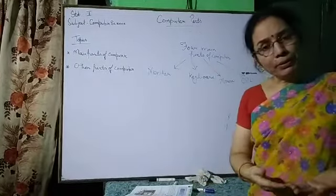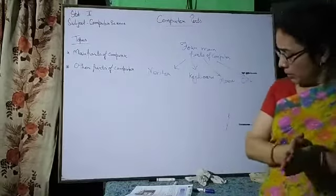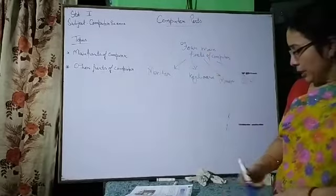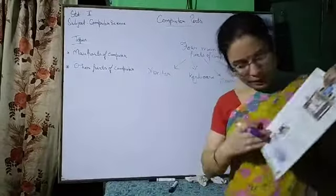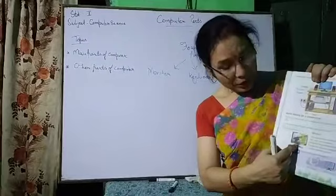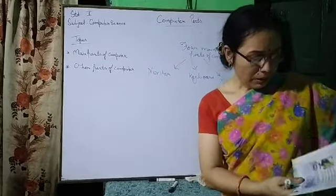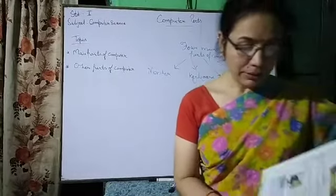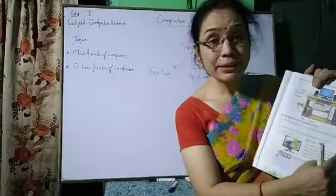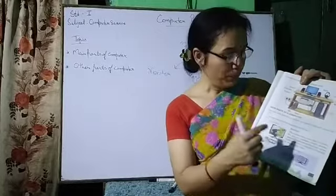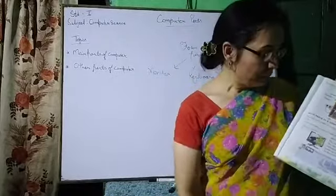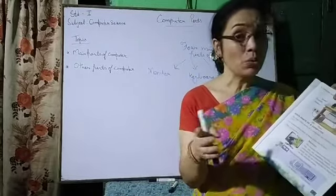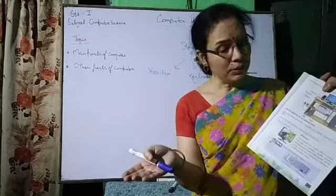Now, one by one, we will discuss all these four main parts. First of all, monitor. Its picture is given in your book. Here you can see this monitor is showing a cartoon movie. The monitor has a screen like a TV screen — it is written in your book. It looks like a television.